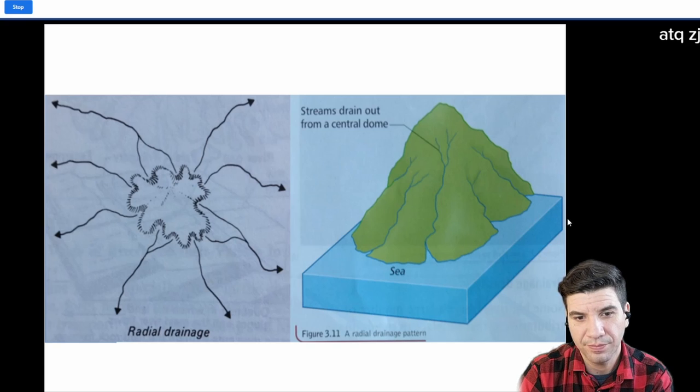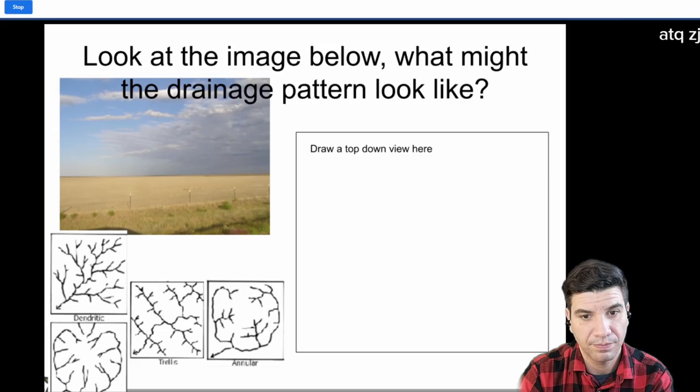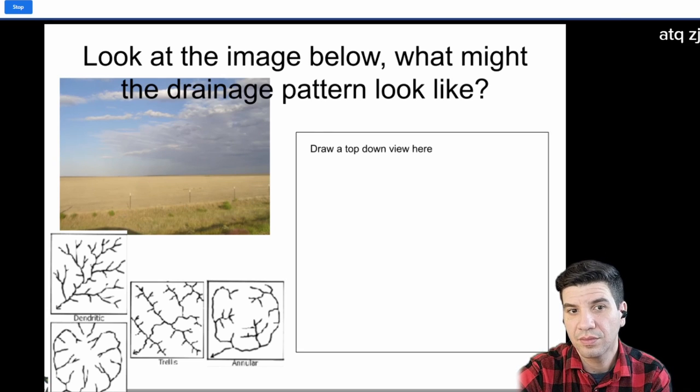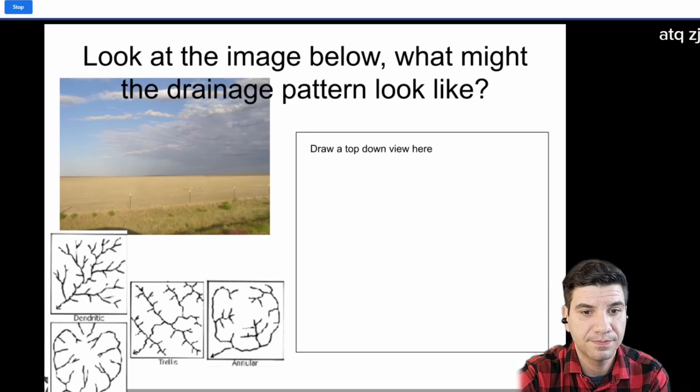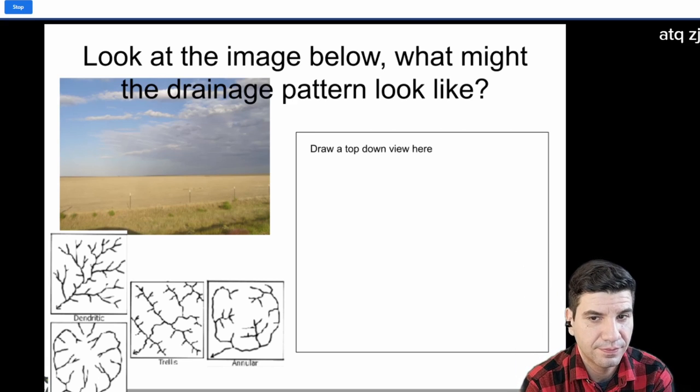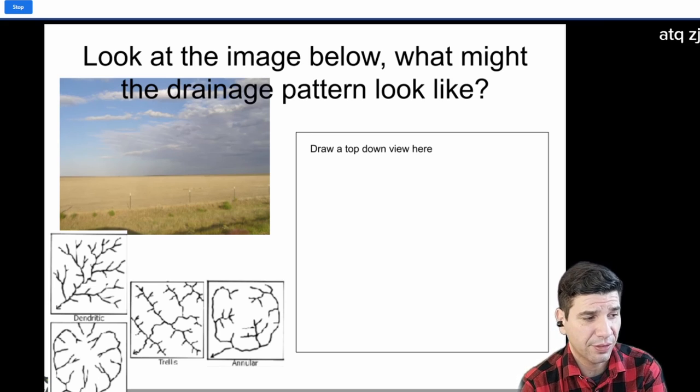All right. So, here's another example. Top of the mountain. And everything just flows downwards. So, look at the image below. And what pattern do you think we might find here? Do the same thing. Draw the pattern in the space provided. And don't forget to put your name. We want to know who drew it. And again, pretty flat for this one.